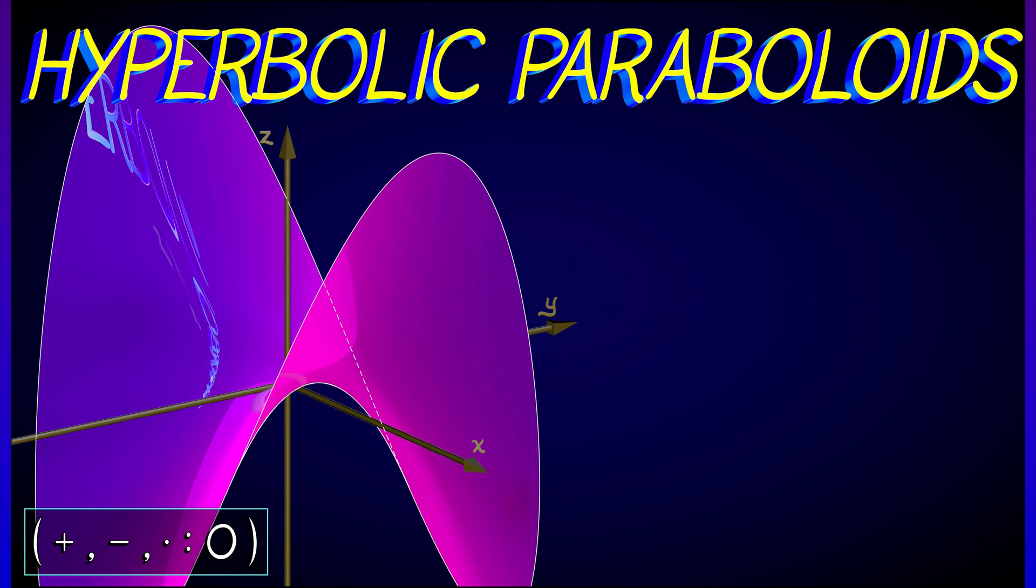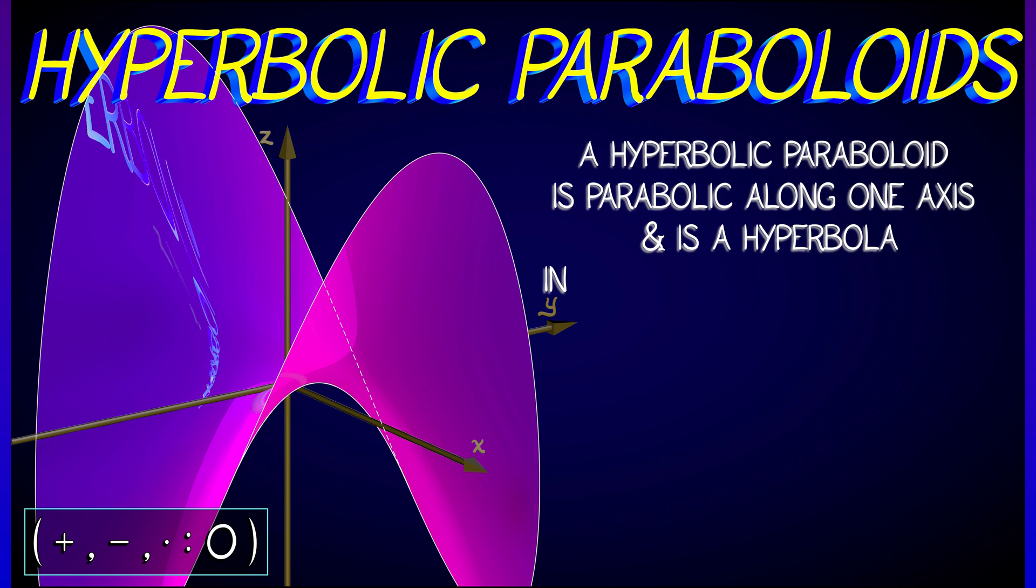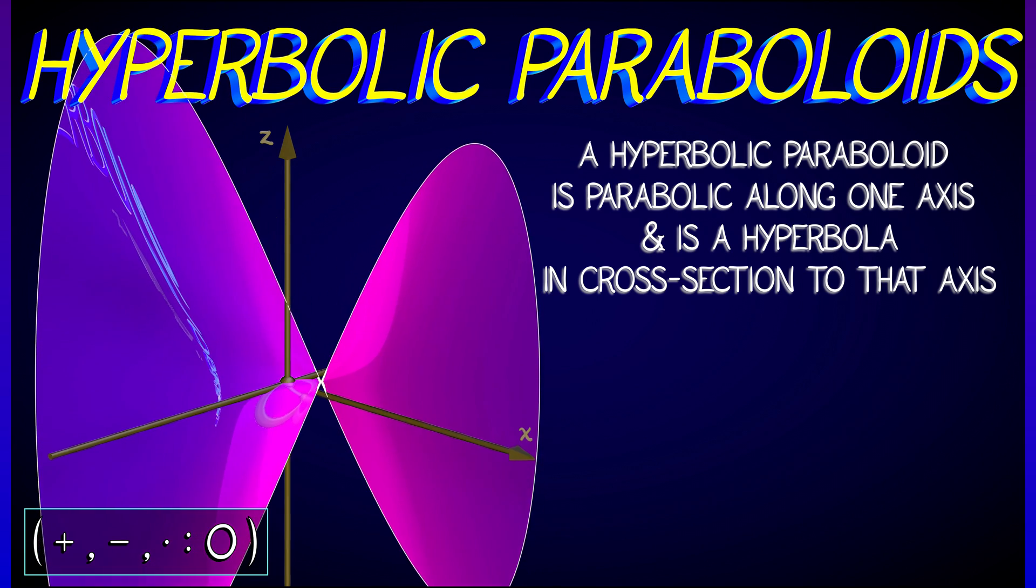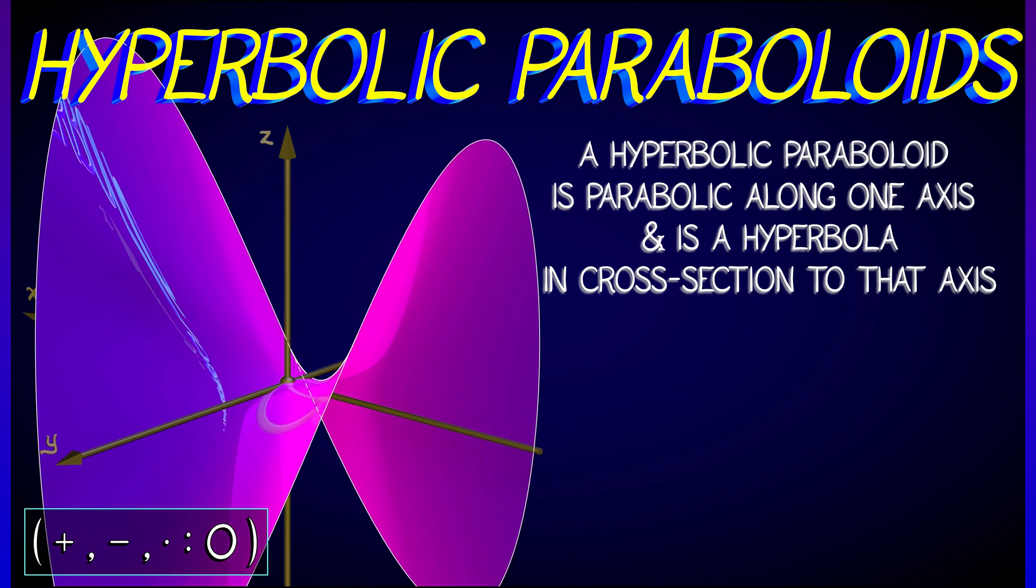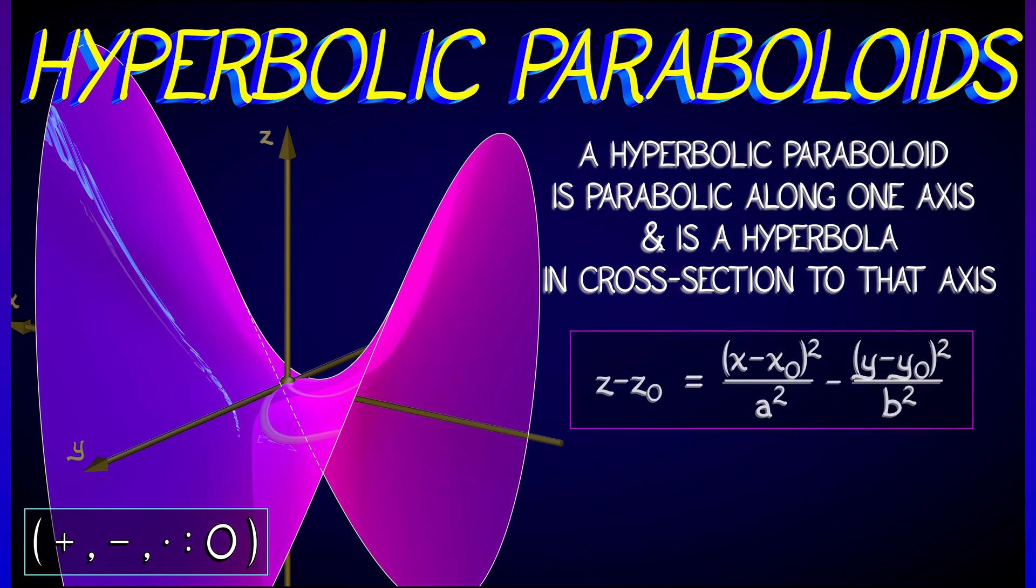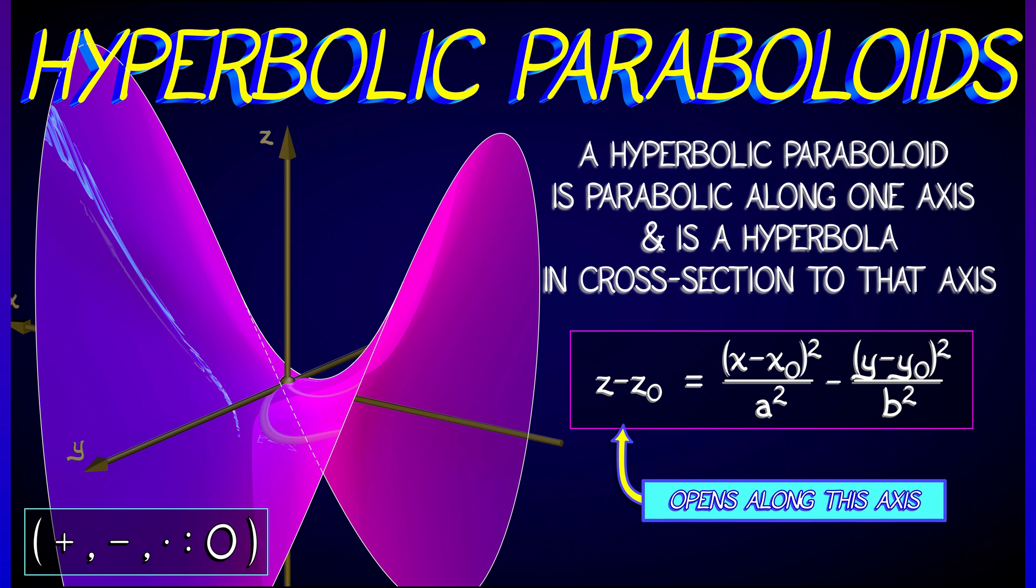There are also hyperbolic paraboloids, which look like hyperbolas when you cut in cross-section to the appropriate axis. The equation for a hyperbolic paraboloid looks like that of an elliptic paraboloid, but with an extra minus sign in there. As you can see, these are really interesting surfaces, a little bit hard to visualize, but really cool surfaces.